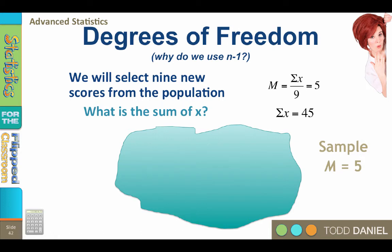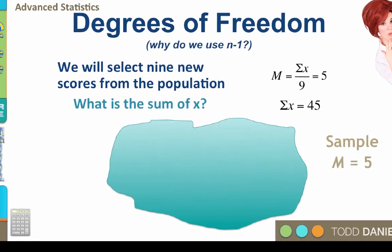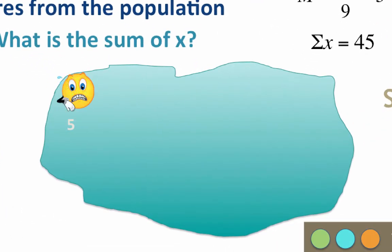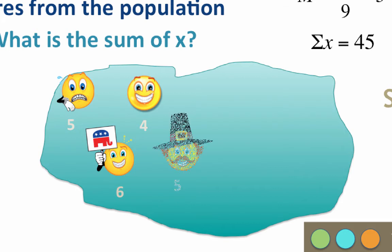If you like, get out your calculator and enter a value of 45. As we see the numbers from our sample, subtract them from 45. The first person got a 5. That leaves us with 40. The second person got a 6. That leaves us with 34. The third person got a 4. That leaves us with 30. Next is 5. That leaves us with 25. Next is 4. That leaves us with 21.